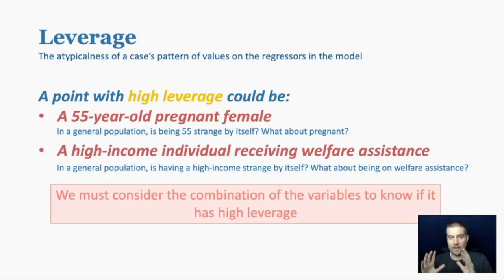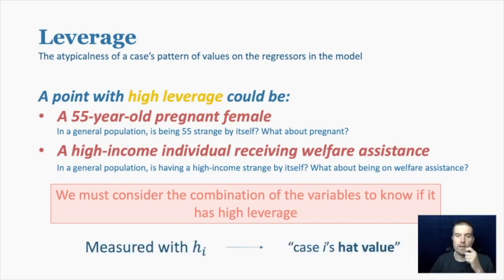So leverage again, it's a combination of the predictors. It has nothing to do with the outcome. The outcome can be totally normal or totally weird. It doesn't matter. It's all about how atypical the combination of values of the predictors for each data point.